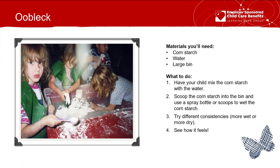Oobleck — if you've never made it, it's cornstarch and water. You just need cornstarch, water, and a large bin. Have your child mix the cornstarch with the water. They can scoop the cornstarch into the bin and use a spray bottle or spoons to wet it. Try different consistencies as you add water — there's no real recipe because it's science. If there's too much water, let it settle and pour it off. This will keep for a couple of days. It's a fun sensory experience.